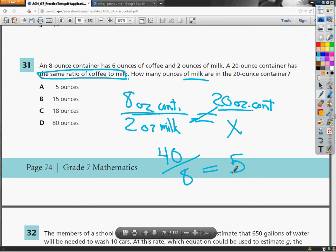Also, we could just look at the question before we start to work on it. An 8 ounce container has 6 ounces of coffee and 2 ounces of milk. So for every 2 ounces of milk, I have 4 times that amount of container. So I'm looking at something that's 4 times itself gives you 20, which gives you easily 5.